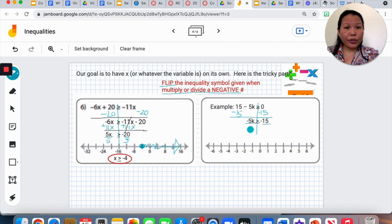Divide negative 5 into the left. I will cancel it out. On the right, negative 5 into negative 15, I will get positive 3.